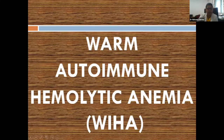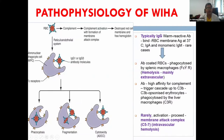In warm AIHA, IgG binds to RBCs at 37°C. These antibody-coated RBCs reach the spleen and are identified by FC gamma receptors on macrophages, which destroy them through phagocytosis, fragmentation, or cytotoxicity — this is extravascular hemolysis, resulting in splenomegaly. Some RBCs also fix complement forming C3b; these C3b-coated RBCs are destroyed by liver macrophages. In a small proportion, complement activation may continue to form membrane attack complex, causing intravascular hemolysis.